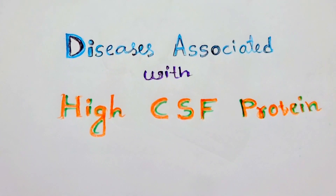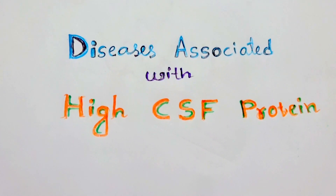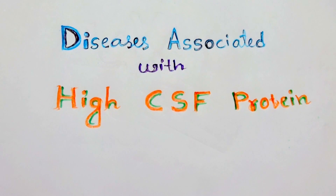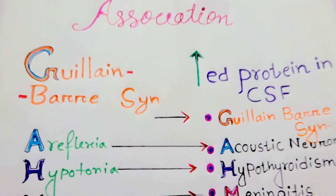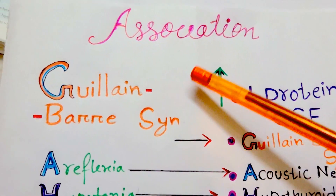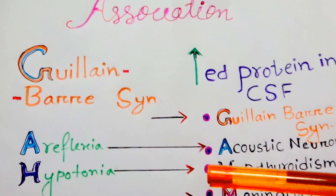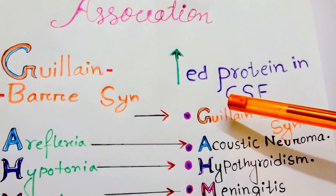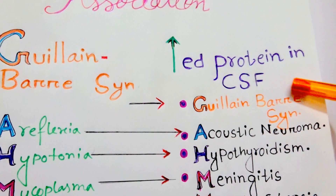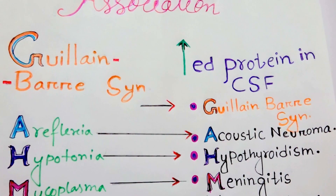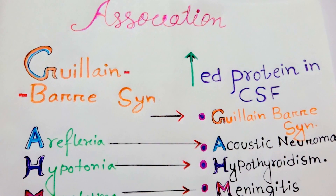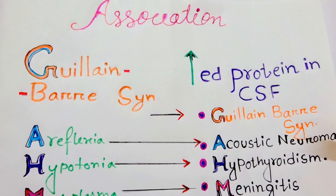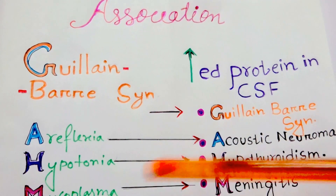Welcome back friends. Today's topic for mnemonic is diseases associated with high CSF protein. Here comes our mnemonic. There is an association between Guillain-Barré syndrome and the condition which causes increased protein in the CSF, so we will see Guillain-Barré syndrome and increased protein in the CSF conditions side by side.